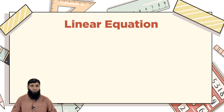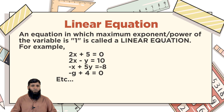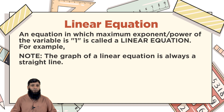We start with the basic definition of a linear equation. It is an equation in which the maximum power of a variable remains one. For example, 2x + 5 = 0 — the variable is x and its exponent is 1. Similarly, equations like 2x - 5 = 10, -x + 5y = -8, and -t + 4 = 0 all have maximum power of the variable equal to 1. These are called linear equations. One very important thing: whenever you draw the graph of a linear equation, you will always get a straight line.